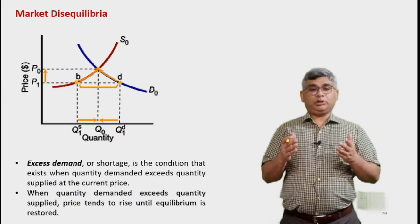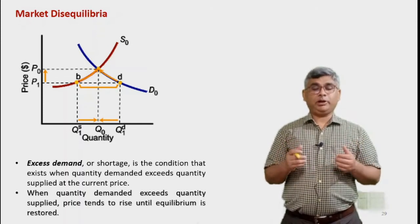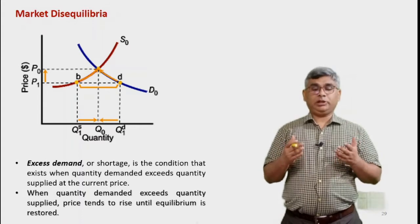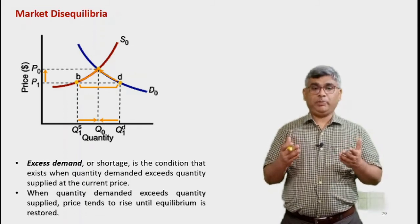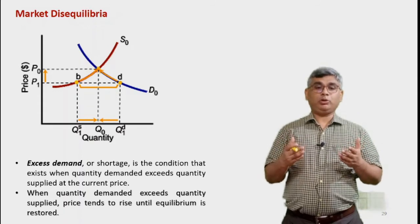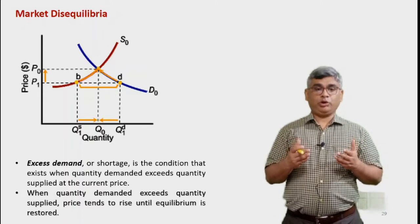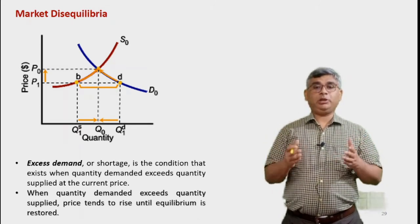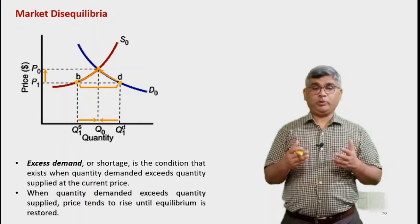To understand the concept, consider a figure with a supply curve and a demand curve whose intersection is the equilibrium point. Let us say point D denotes the actual demand for a product corresponding to quantity Q1D, and point B denotes the supply quantity Q1S. The difference between B and D indicates a mismatch between demand and supply — this is disequilibrium.